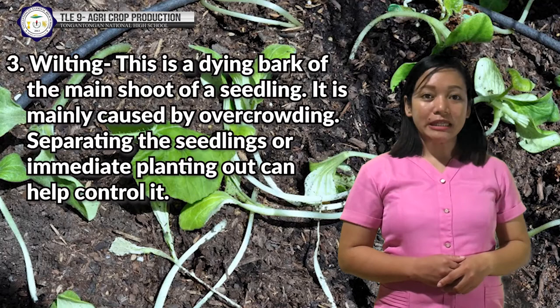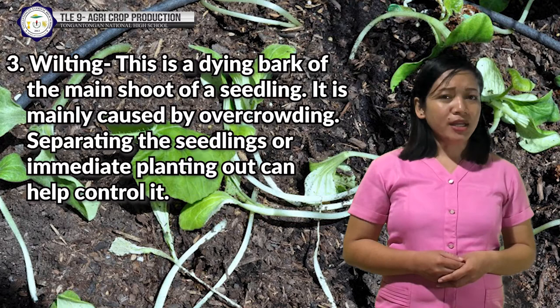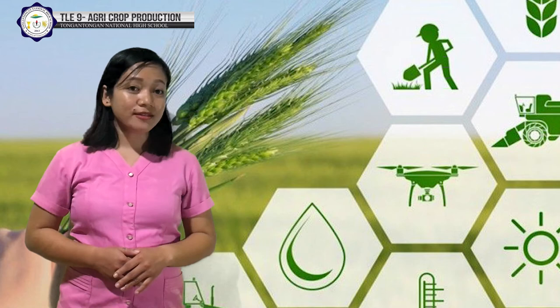Another disease is wilting — a diversion from the main shoot of a seedling. It is mainly caused by overcrowding. Separating the seedlings or immediate planting out can help control it. The common diseases that occur in young plants are: damping off, powdery mildew, and wilting.